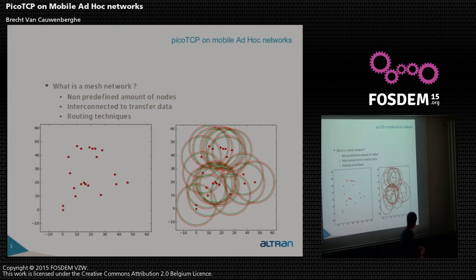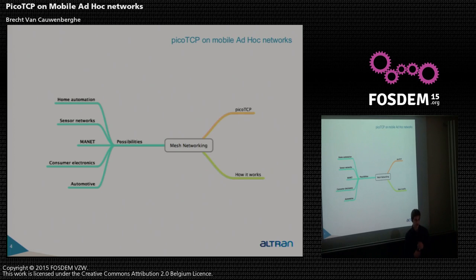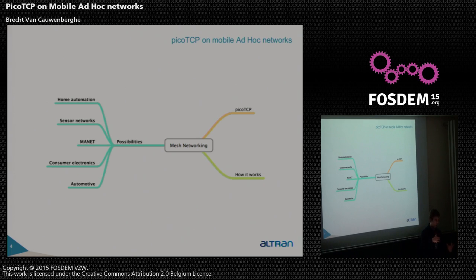Mesh networking is a collection of different nodes which set up the routing infrastructure to communicate with each other in a dynamic way, describing a specific routing technique. It can be used for sensor networks like geospatial information, nodes spread over a geographical environment, home automation, or a mobile network that configures itself and dynamically adapts to how the network is changing.